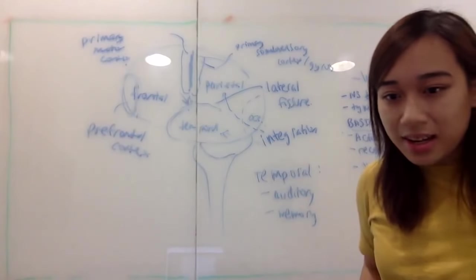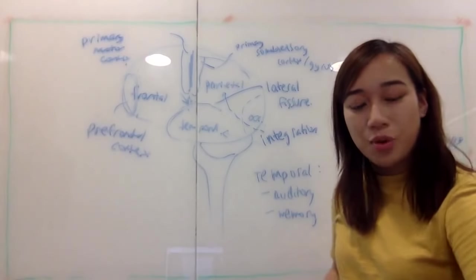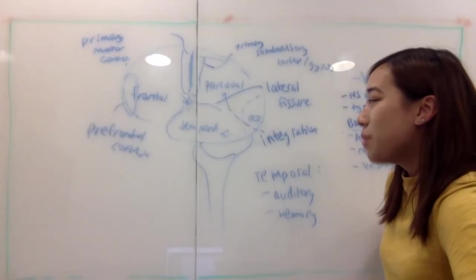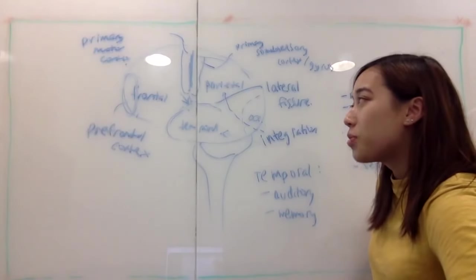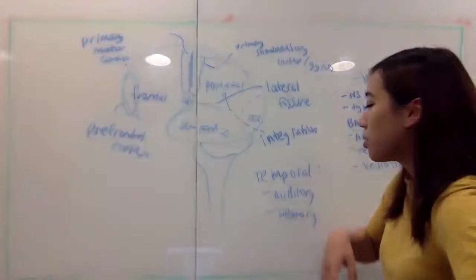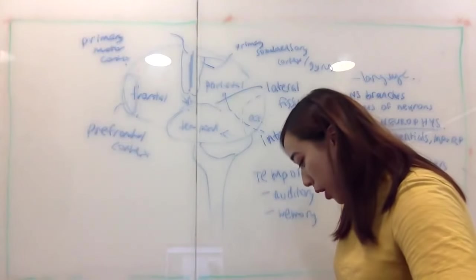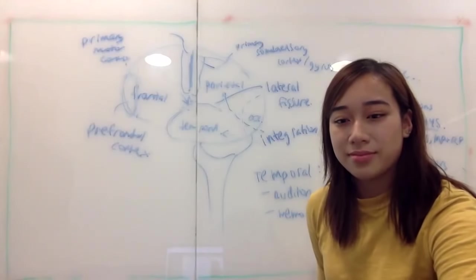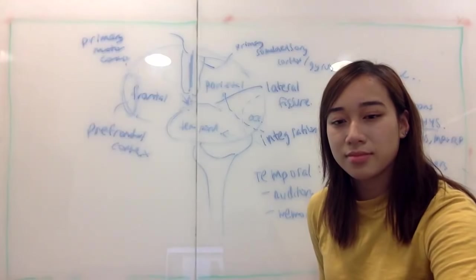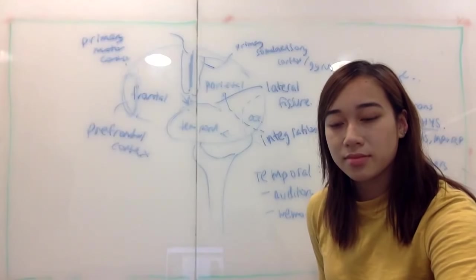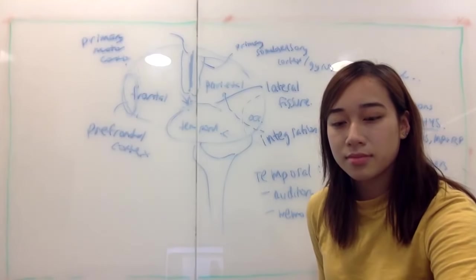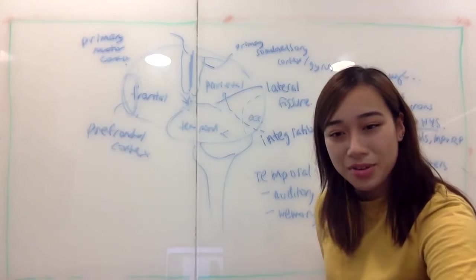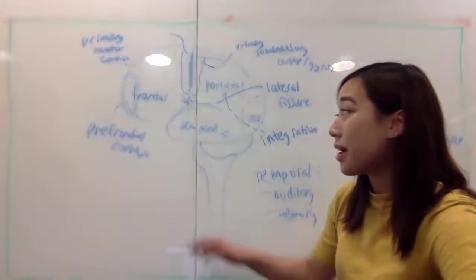Language involves two areas. Does anyone know where Broca's area is specifically located? It's in the inferior frontal gyrus. So looking at the brain model, your Broca's area is right here — in the inferior part of your frontal lobe, also known as the inferior frontal gyrus.